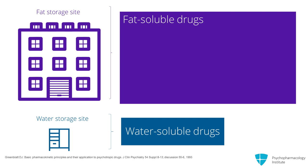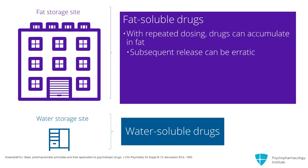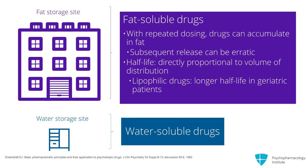This is important for several reasons. In the elderly, fat-soluble drugs have a short life in the circulation because they are taken up quickly by these fat sinks. But then, with repeated dosing, the drugs can accumulate in fat and subsequent release can be erratic. Furthermore, as the half-life of a drug is directly proportional to its volume of distribution, any lipophilic drug will remain in the body longer — that is, have a longer half-life — in geriatric compared to younger patients.